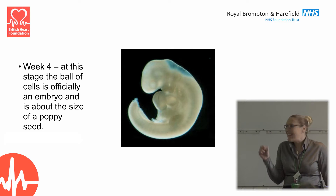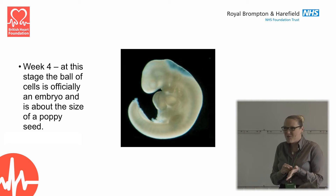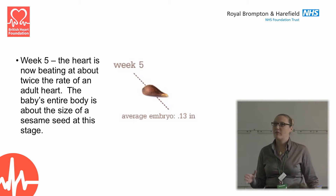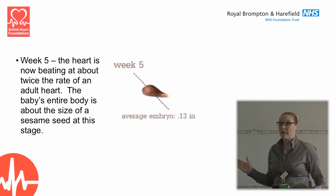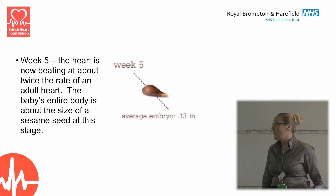At week four this tiny embryo is only the size of a poppy seed, so it's really minute. By week five we actually have a heartbeat — most people still don't even know they're pregnant at week five, but the embryo has a heart and it's beating about twice the speed of a normal adult heartbeat. The baby's still only the size of a sesame seed but we have a heartbeat as early as five weeks.